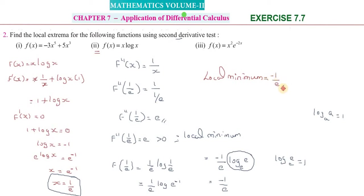To summarize the method: differentiate f(x) to get f'(x), set f'(x) = 0 to find critical values, then differentiate again to get f''(x). Substitute the critical values — if f''(x) < 0, it is a local maximum; if f''(x) > 0, it is a local minimum. Substitute back into f(x) to get the actual extreme values.